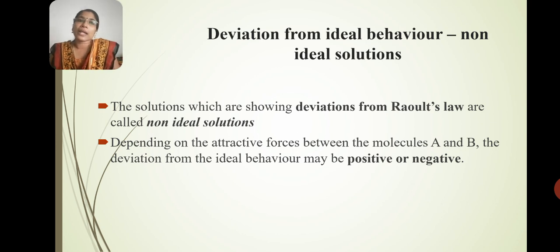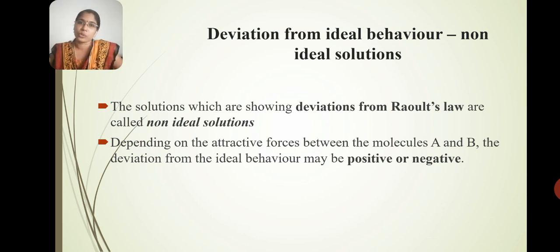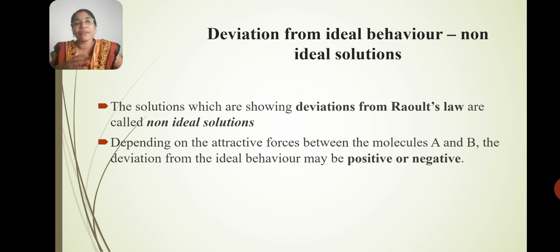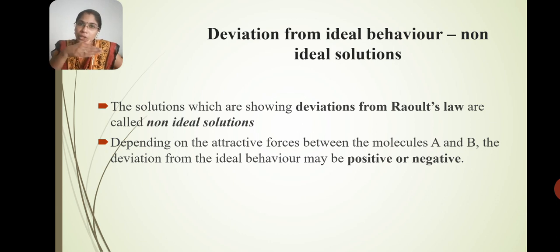In the case of Raoult's law deviation, that is non-ideal behavior deviation — ideal behavioral deviation means non-ideal solution. Non-ideal solutions are the solutions showing deviations from Raoult's law.